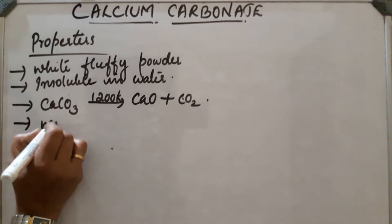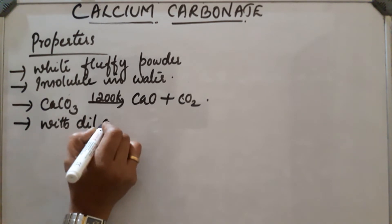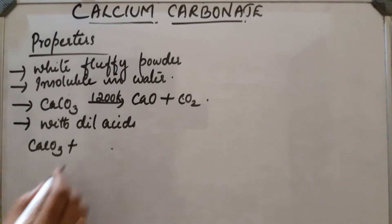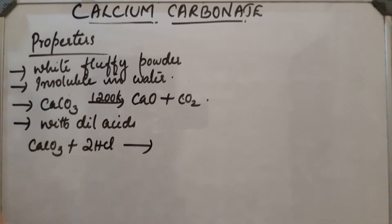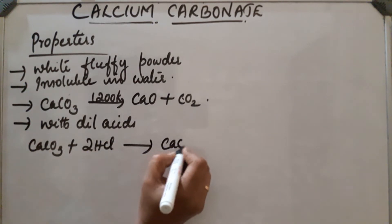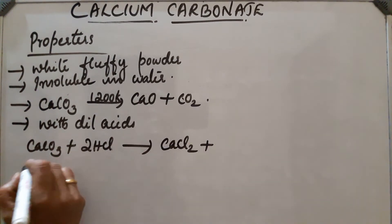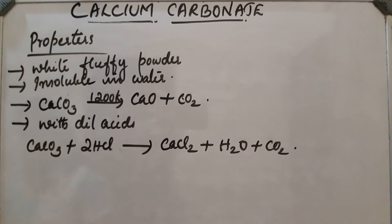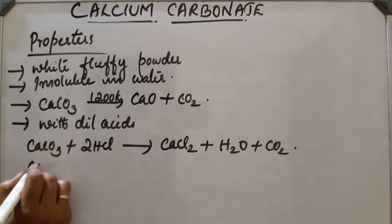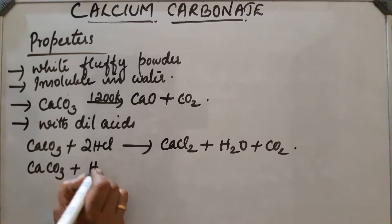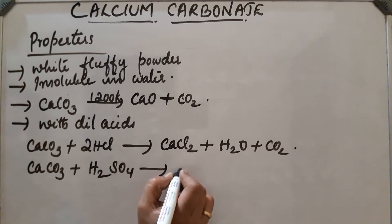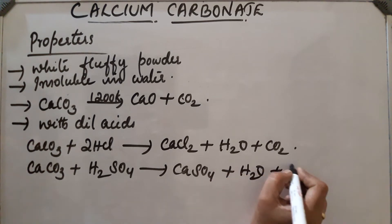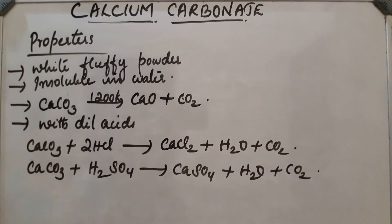With dilute acids like HCl and H2SO4, it produces carbon dioxide. Calcium carbonate reacting with hydrochloric acid (2 HCl) gives CaCl2, H2O, and carbon dioxide. With H2SO4, it produces CaSO4, H2O, and carbon dioxide gas.